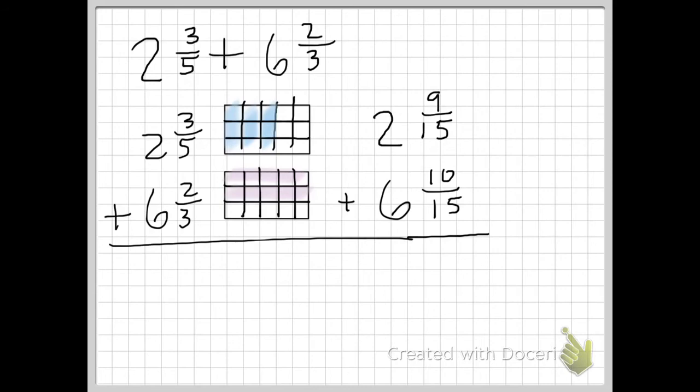Now I can proceed to adding the problem. I always start off with my whole numbers. 6 plus 2 equals 8. On to my fractions. I only add the numerators. 9 plus 10 equals 19. My denominator which represents partitions stays the same. So my preliminary answer is 8 and 19 fifteenths. Now this is the part where I'm going to have to regroup.